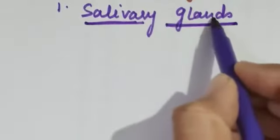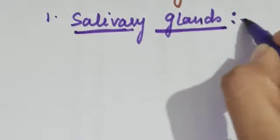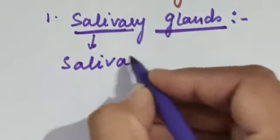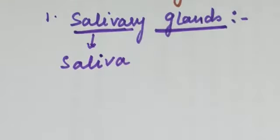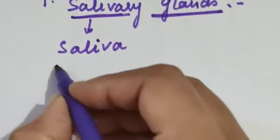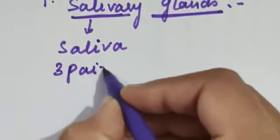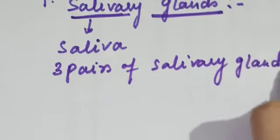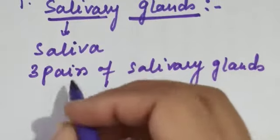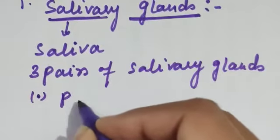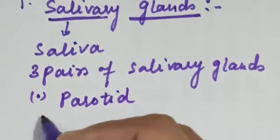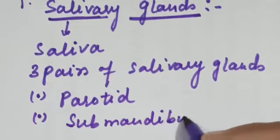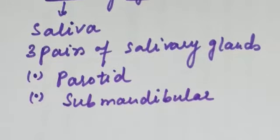We call the secretion of salivary glands 'saliva,' and this saliva is mainly secreted by three pairs of salivary glands. So there are three pairs of salivary glands — six glands in total. The first is parotid, the second is submandibular, and the third is sublingual.